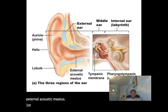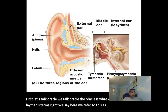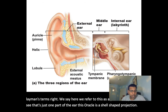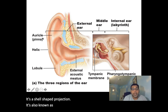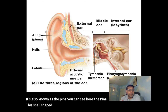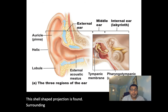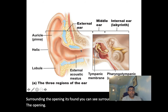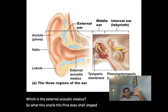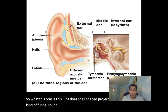Starting with the external ear: it consists of the auricle and the external acoustic meatus. The auricle — what we call the ear in layman's terms — is a shell-shaped projection also known as the pinna. It surrounds the opening of the external acoustic meatus and helps funnel sound into it.